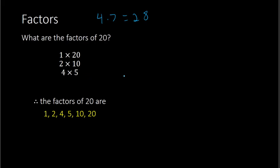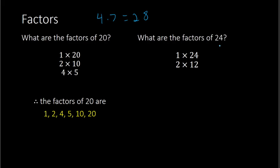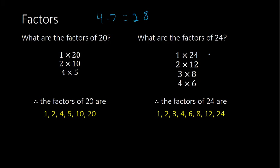Let's try another example. If you were told to find the factors of 24 — what whole numbers multiply to get 24 — we could do 1 times 24, 2 times 12, 3 times 8, or 4 times 6. So the factors of 24 are: 1, 2, 3, 4, 6, 8, 12, and 24.